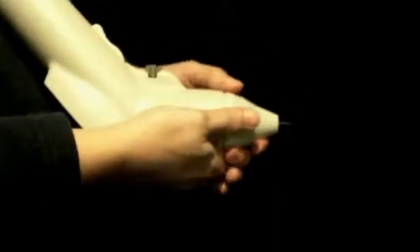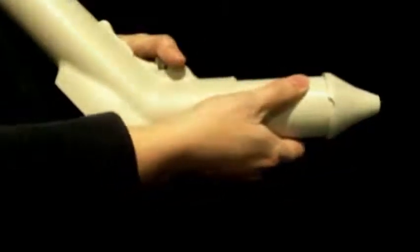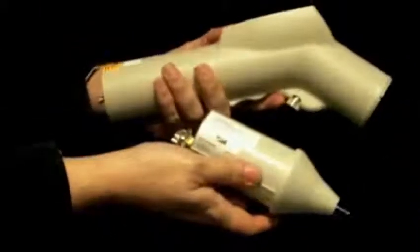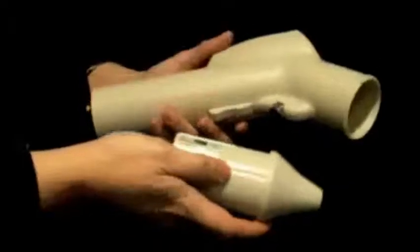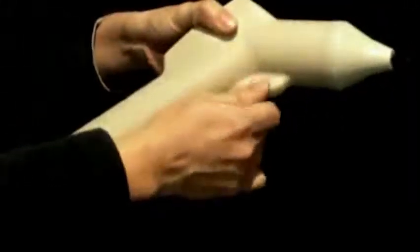Locate the notch, place thumb on notch and push outward. That will release the ESD module and you can replace it with a different module. To put in the module, locate guide on module, notch on ESD gun, place, push in firmly until all the way in, then retighten thumb screw.